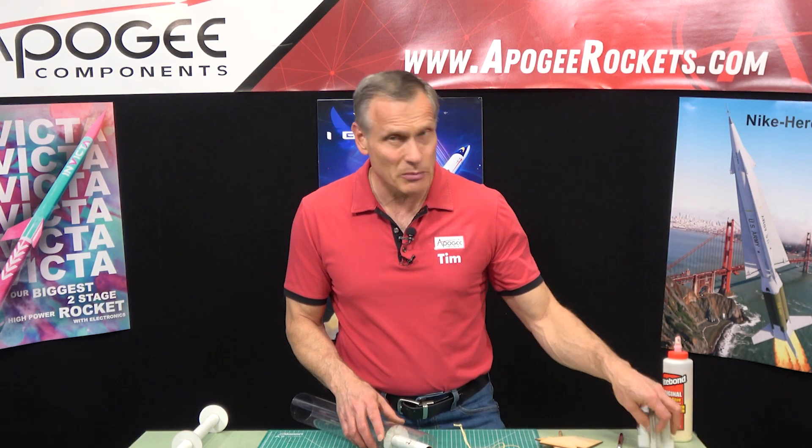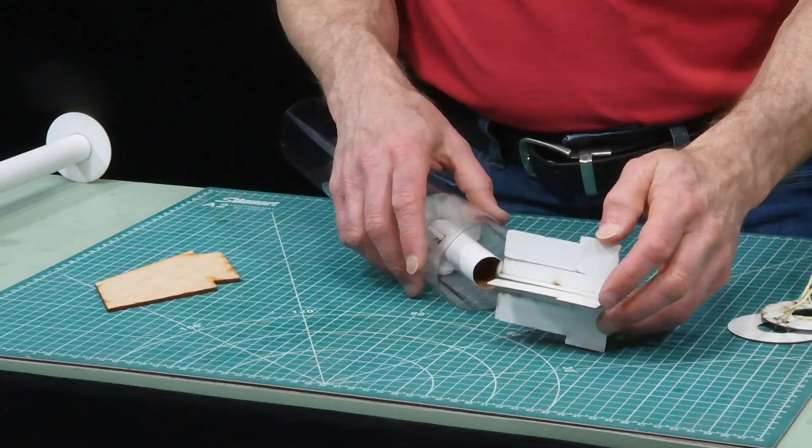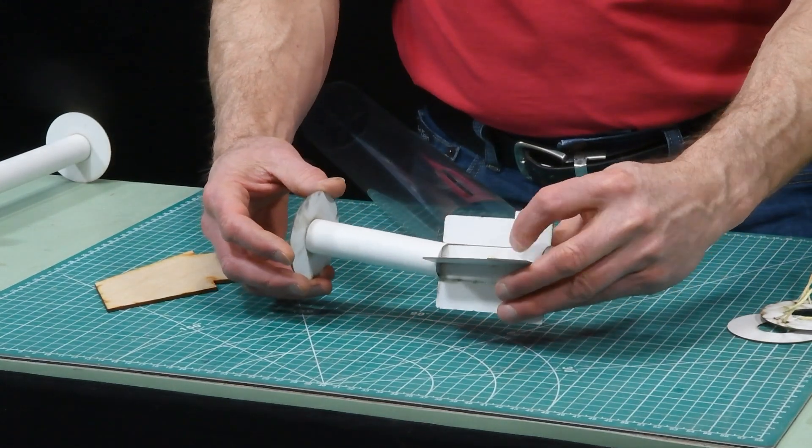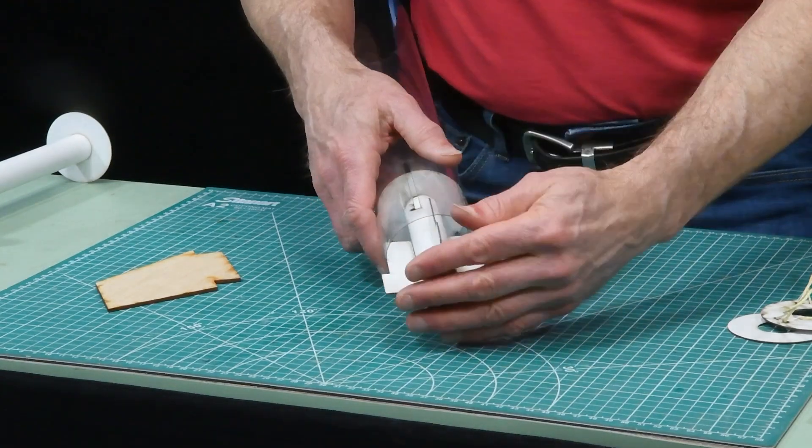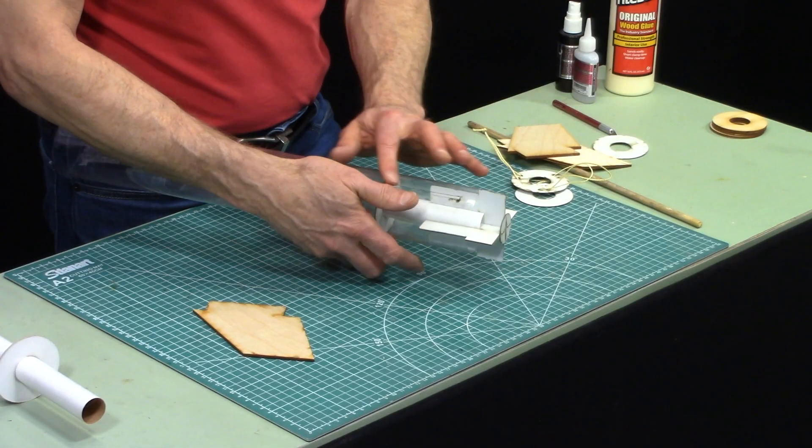Another method that's kind of similar is in some of the Apogee kits we've gone ahead and created an alignment jig. And the purpose of this alignment jig is to align this tube and make sure that everything is nice and straight. So again I would put that alignment jig in and that centers everything up.